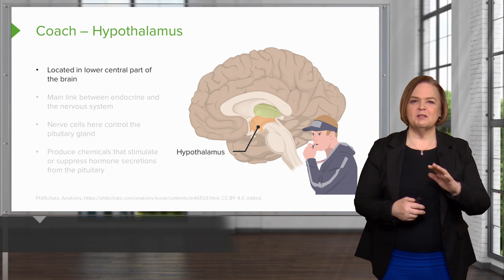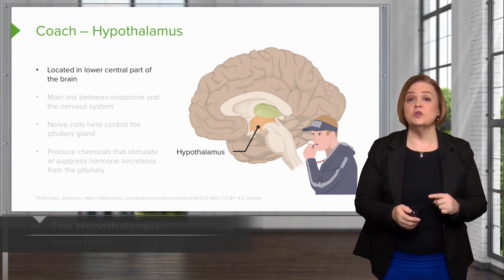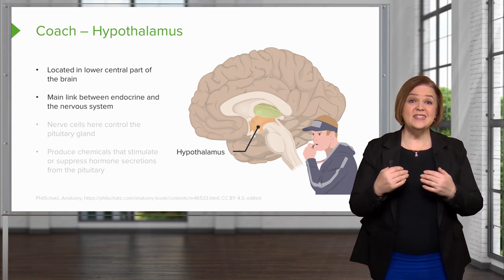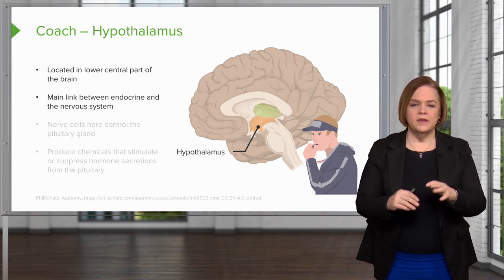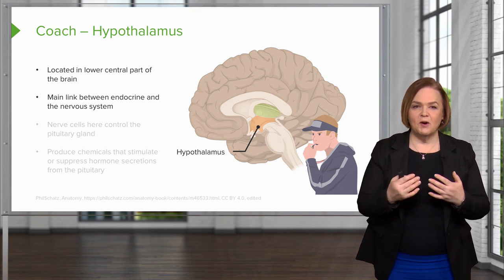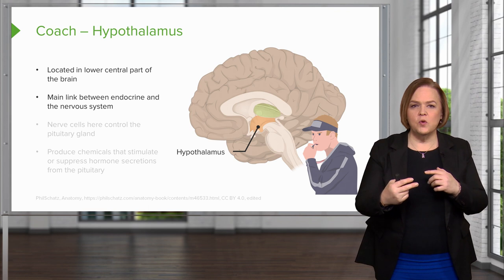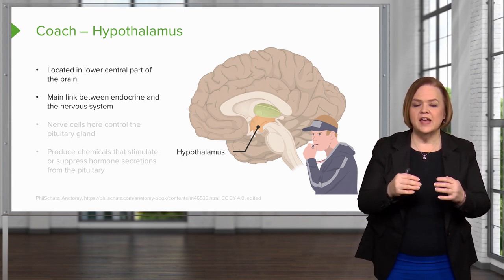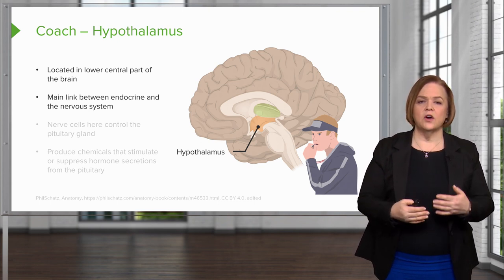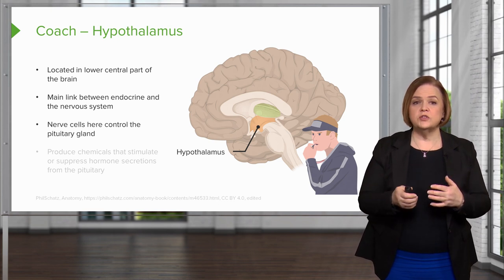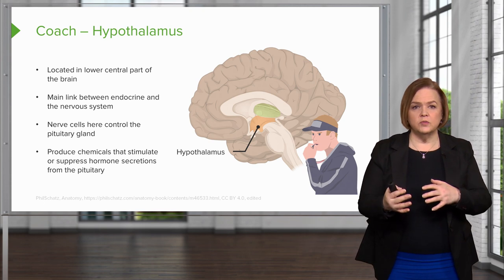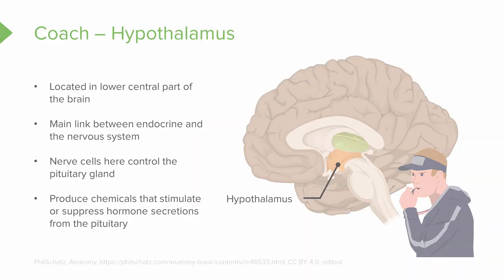The hypothalamus is located in the central part of your brain — you can see it in our drawing. It's the main link between the endocrine and the nervous system. This is an amazing part of your brain that coordinates between your endocrine system, meaning hormone release, and your nervous system, so it's critically important in managing all these responses. Nerve cells here control the pituitary gland, producing chemicals that stimulate or suppress hormone secretions from it. If you have damage to the hypothalamus, it will have phenomenal effects on the rest of your body.